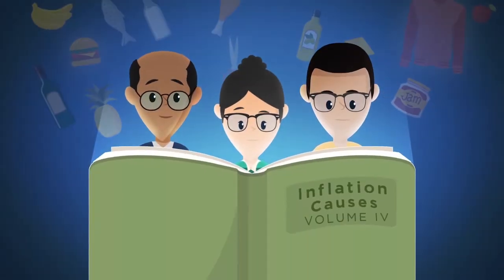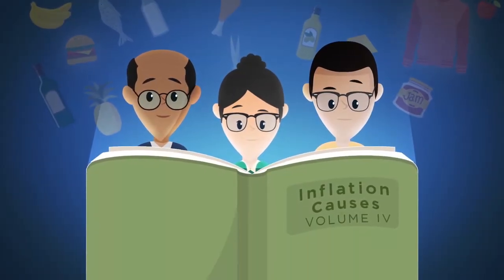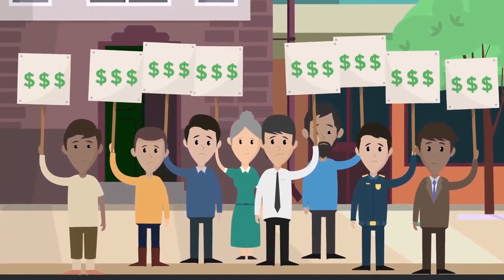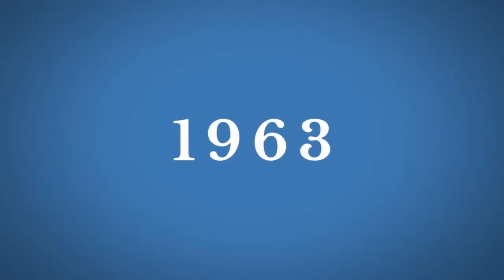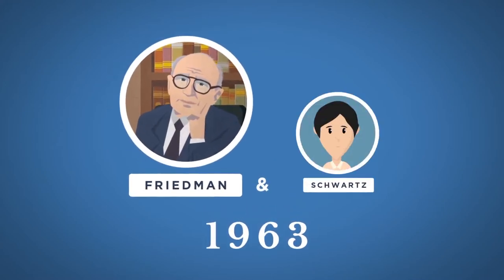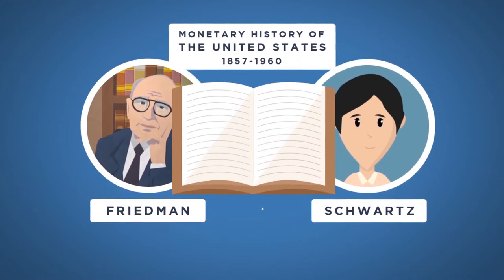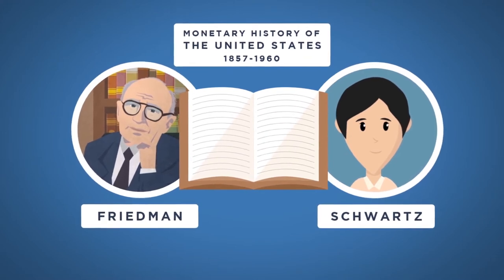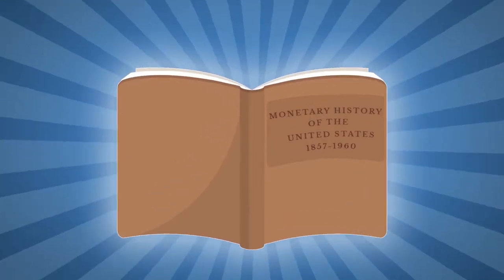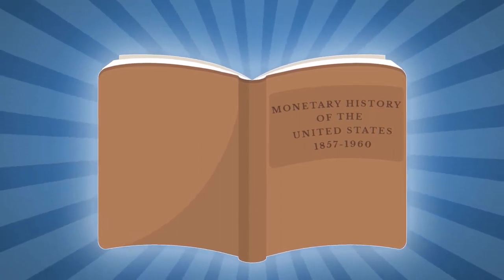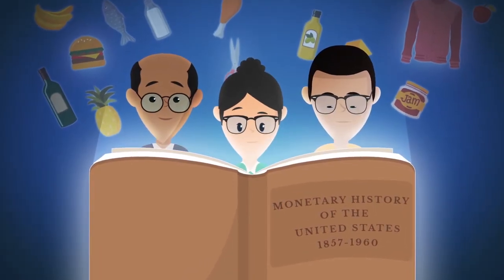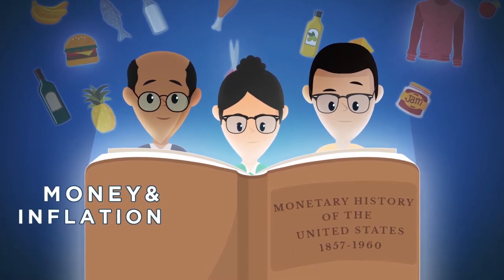In the past, there were a host of explanations about the causes of inflation, including increasing wage demands by workers. In 1963, Milton Friedman and accomplished economist Anna Schwartz completed Monetary History of the United States, 1857 to 1960. This 800-page seminal work on money eventually revolutionized the way most economists think about both money and inflation.